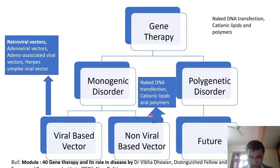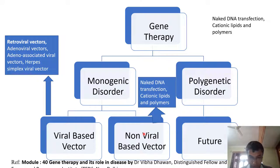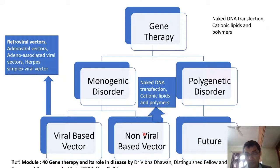In the ex vivo method, you first isolate tissues and cells from the patient. Then, in laboratory conditions, you can microinject the DNA into those particular cells or tissue culture media. After ensuring all efficacy and safety measures are taken, you then inject that desired gene of interest into the patient. This is the safest method, but it is highly inefficient.